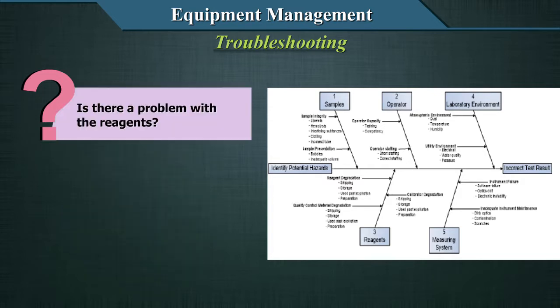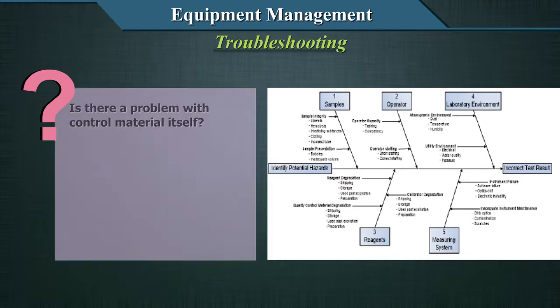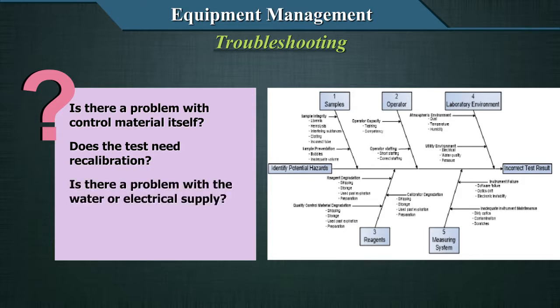Is there a problem with the reagents? Consider storage, expiry, and updating of the new lot numbers of reagents with calibration. All those things should be looked at as part of the troubleshooting. Is there a problem with control material itself? Does the test need recalibration? Is there a problem with the water or electrical supply? Environmental problems such as temperature outage?